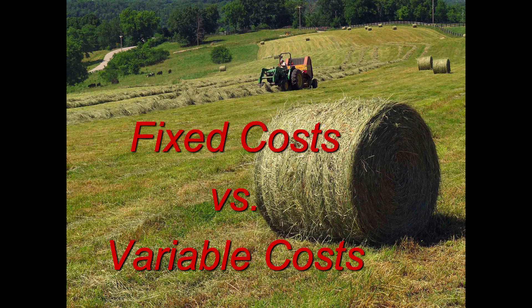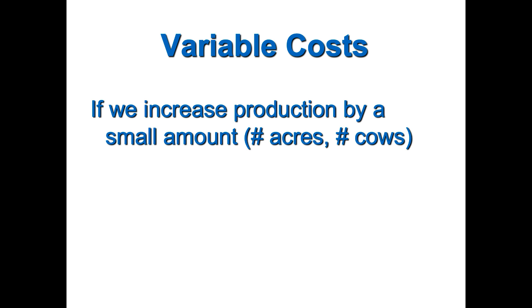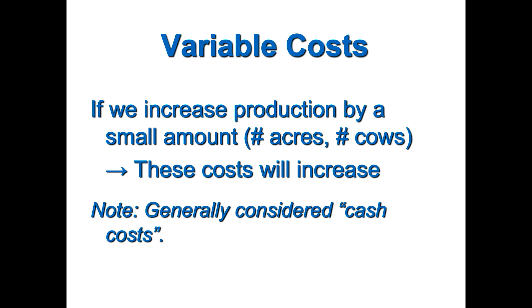To get us started with fixed costs, we're going to talk about fixed and variable costs — just the difference between the two. Think about your variable costs: if you increase your production just a little bit — whether that's number of acres or number of cows — what costs are going to increase almost proportionally to that? Those are generally your variable costs of production.